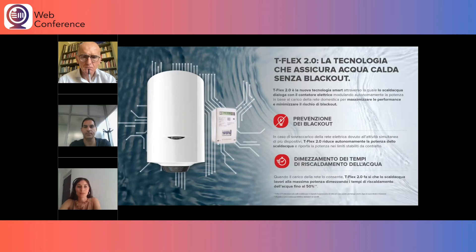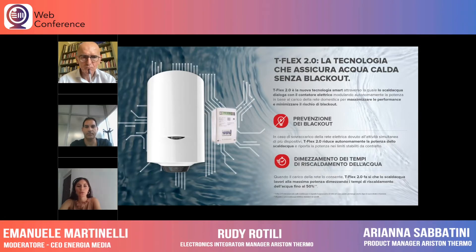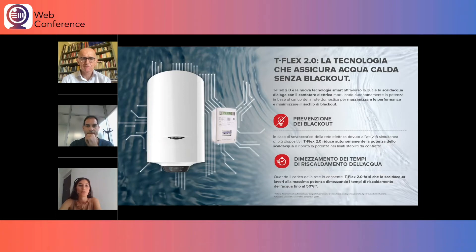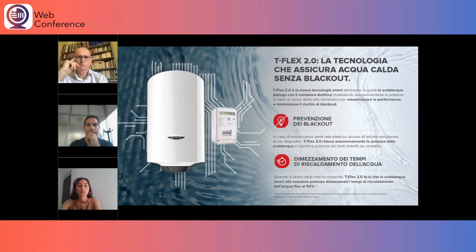Per quanto riguarda la prevenzione del blackout, non intendo il blackout generalizzato delle città, ma la situazione in cui in casa si hanno accesi scaldabagno e diversi elettrodomestici, per cui si crea quella situazione spiacevole di salto di corrente, per cui magari bisogna andare in garage a riattivare il contatore. In questo caso, conoscendo la potenza disponibile in casa, il prodotto si automodula di conseguenza abbassando la sua potenza, in modo che l'utilizzo rientri nei limiti stabiliti da contratto.